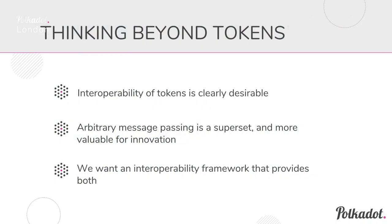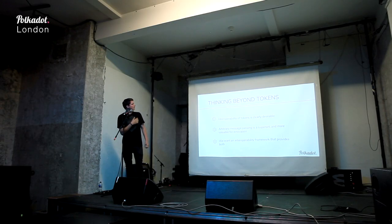The next thing is you want to think beyond tokens. You can very easily read about why interoperability with tokens makes sense — decentralized exchanges, atomic swaps, exchanging value across chains. But the reality is that a lot of messages are not necessarily value transfers. So you want to support arbitrary message passing, which is a superset of just value transfers. Polkadot wants to support both.